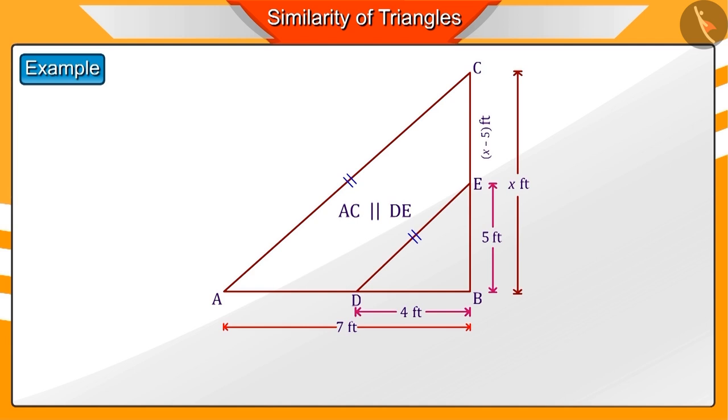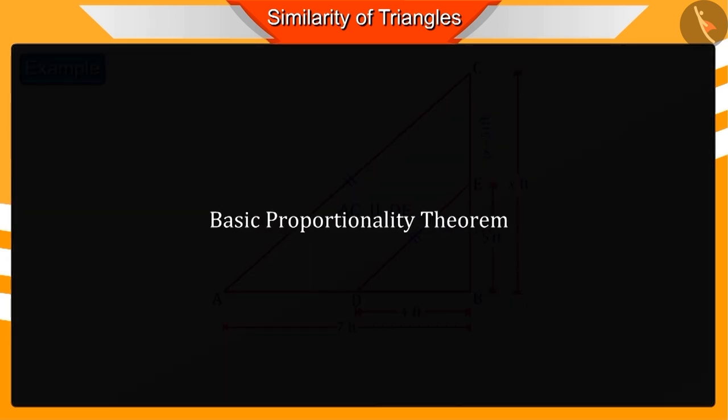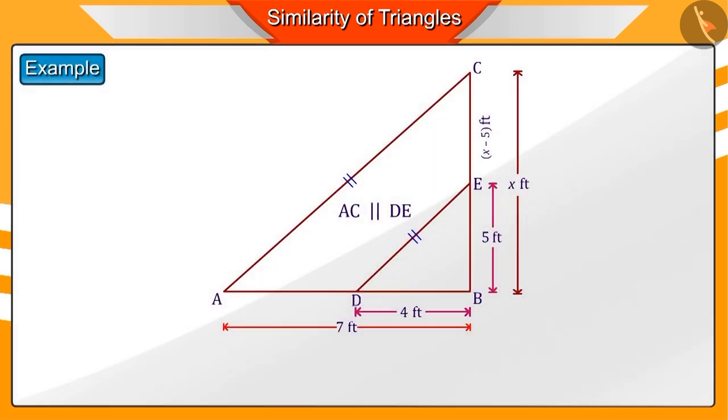Can you find the value of X? For this, we can use the basic proportionality theorem, according to which, if a line is drawn parallel to one side of a triangle to intersect the other two sides in distinct points, then the other two sides are divided in the same ratio.